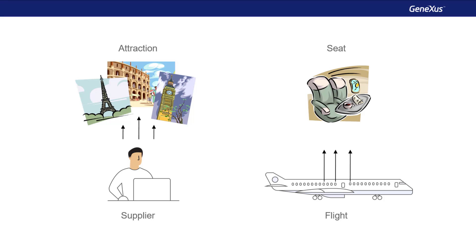The other difference is that when we're entering the details of a Flight, we're also entering the details of its Seats — just like when we enter an Invoice with Lines, all the information is entered at once. On the other hand, the Suppliers and Attractions details do not have to be entered all at the same time.